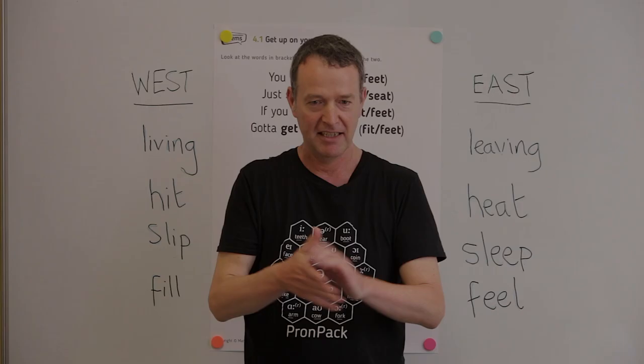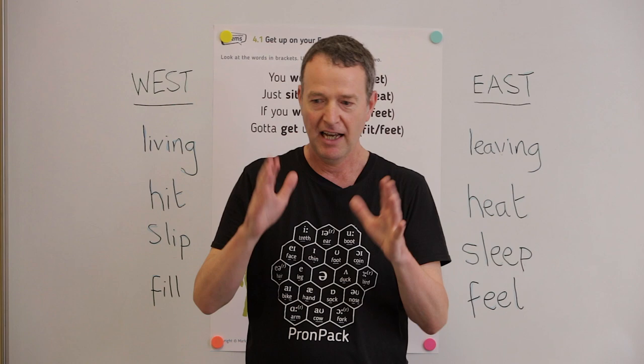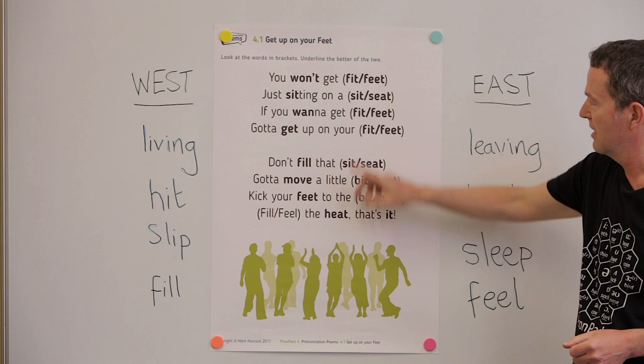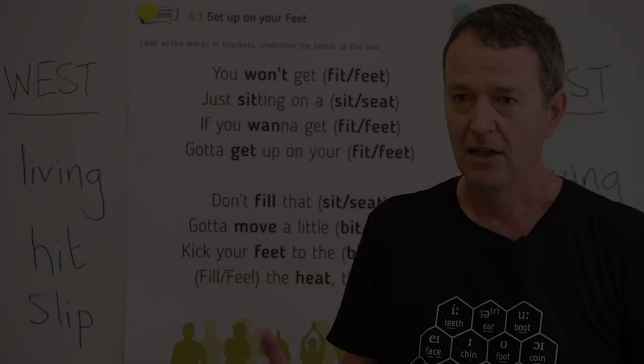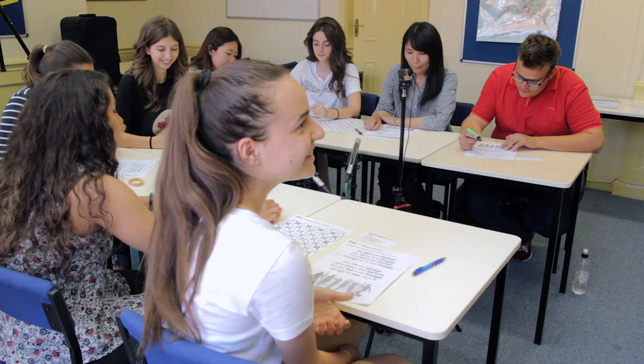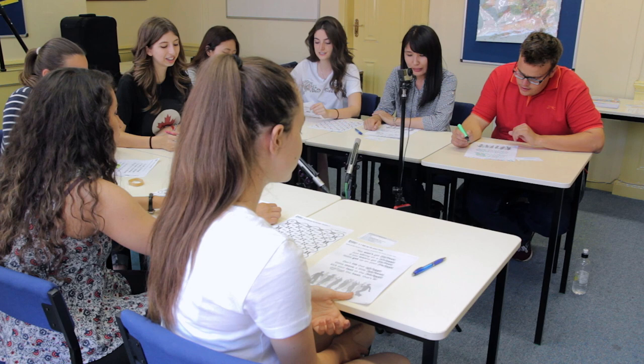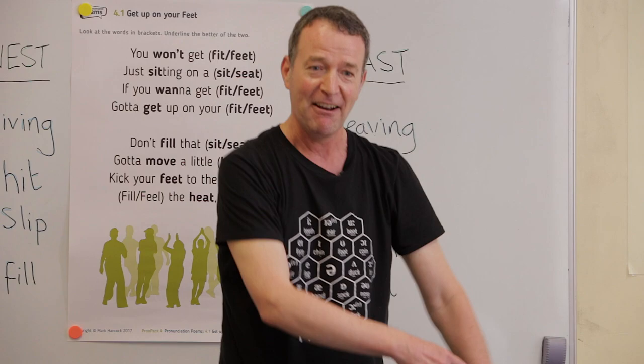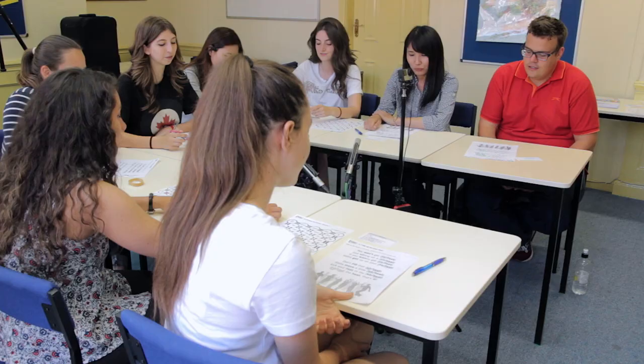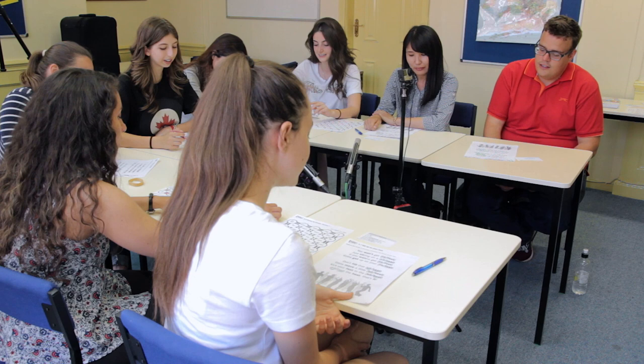This is the last activity and it's a poem. You've got two possible words: 'fit' or 'feet'. Listen to me and underline the one you hear. Now we're going to do it together — repeat after me, each line. You won't get fit just sitting on a seat. If you want to get fit, you've got to get up on your feet. Don't fill that seat, got to move a little bit. Kick your feet to the beat, feel the heat. That's it.